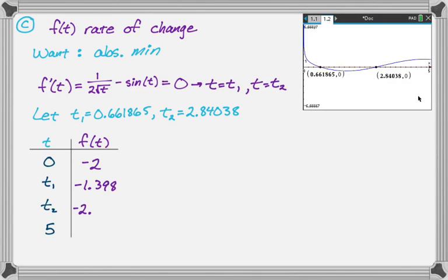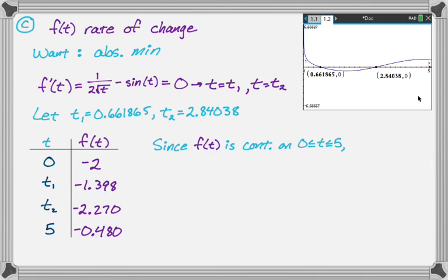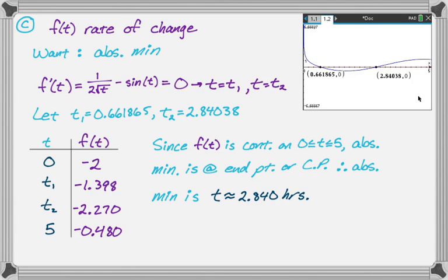I plugged in zero, t1, t2, and five into the calculator and got the corresponding f of t values. Since f of t is continuous on the interval from zero to five, the absolute minimum occurs at an endpoint or a critical point. Therefore, the absolute minimum of f of t occurs at t approximately equal to 2.840 hours — that is when the distance was decreasing most rapidly.